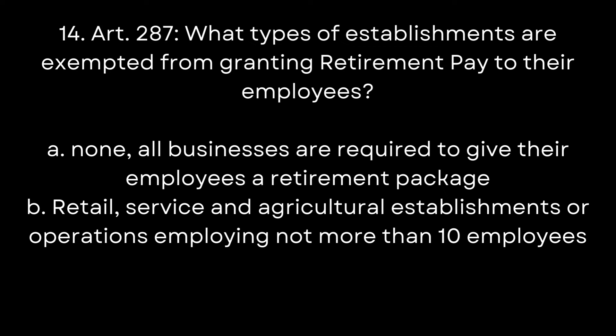Question 14. Article 287. What types of establishments are exempted from granting retirement pay to their employees? A. None — all businesses are required to give their employees a retirement package. B. Retail, service, and agricultural establishments or operations employing not more than 10 employees. The answer is B. Establishments employing not more than 10 employees are not required.